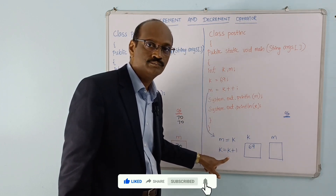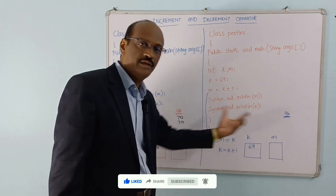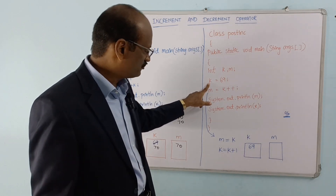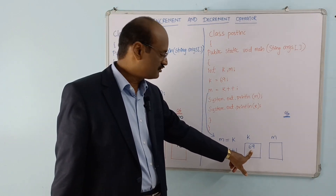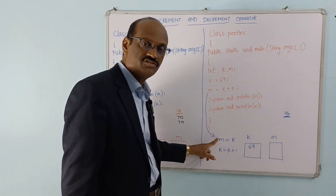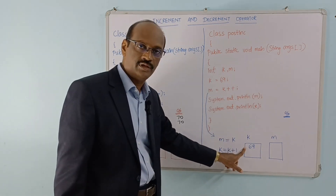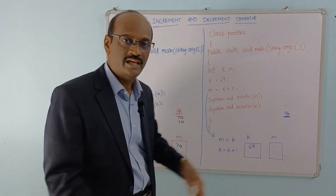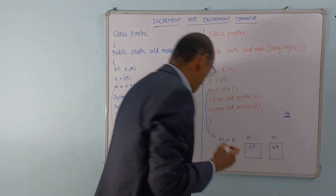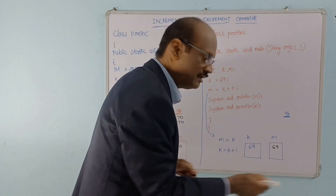First assignment will be performed using the old value in the expression. So consider the previous value — the old value. If you look at k, the value is 69. In the statement, first the old value 69 is assigned to m, then k will be incremented by 1. Now k will be incremented by 1.